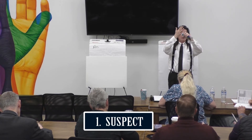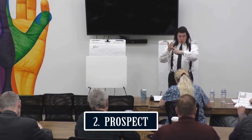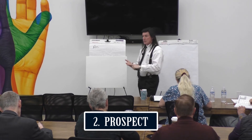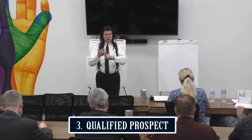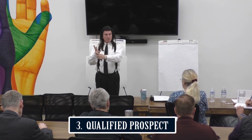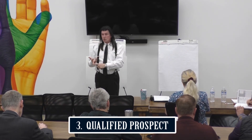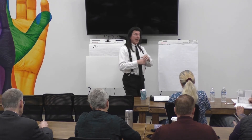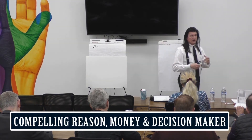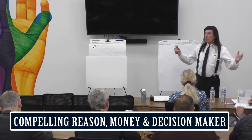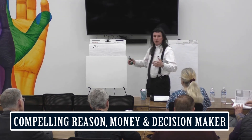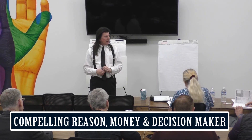A suspect moves to prospect if you have a product or service that can help them. They move from prospect to qualified prospect when you confirm they have money, a compelling reason to buy, and are the decision makers. And then finally, all things being equal, they move into the final category: client. People don't do anything without a compelling reason, especially if it involves money.